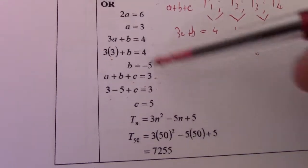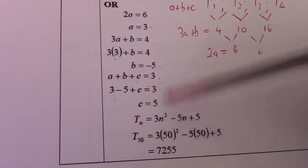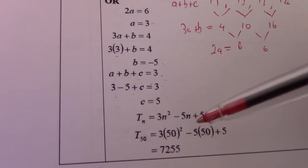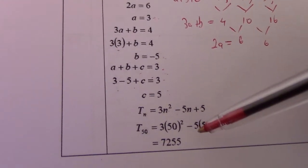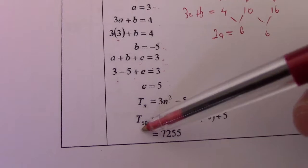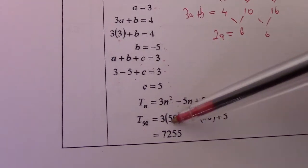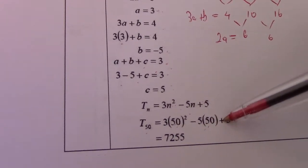So T_n then equals 3n squared minus 5n plus 5. I want the 50th term of the quadratic sequence.